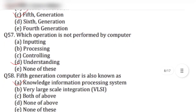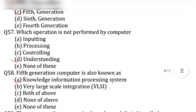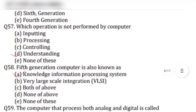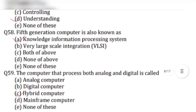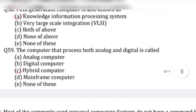Question 57: Which operation is not performed by a computer? Answer is option D, understanding. Question 58: Fifth generation computers are also known as — answer is option A, knowledge information processing system.